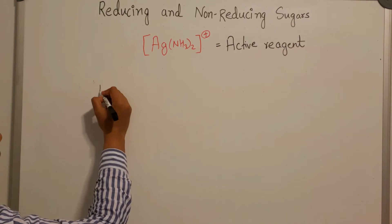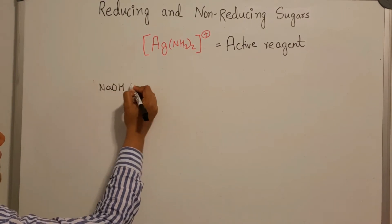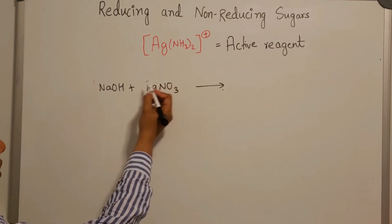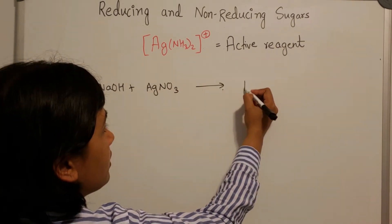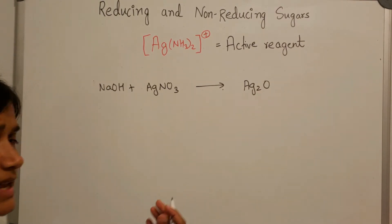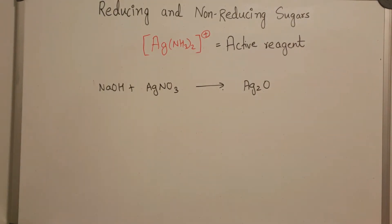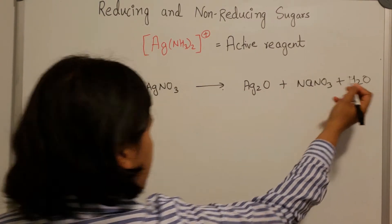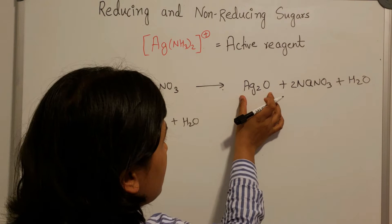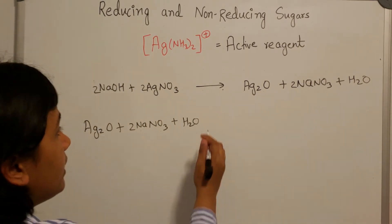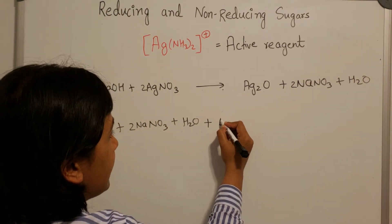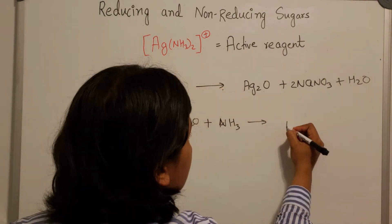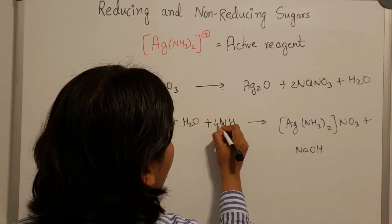To prepare the active reagent for Tollens test in the lab, a few drops of sodium hydroxide are added to an aqueous solution of silver nitrate. The hydroxide ions convert the silver nitrate into silver oxide, which precipitates as a brown solid from the solution. In the meantime, sodium nitrate and water are also formed.